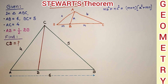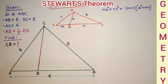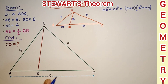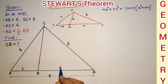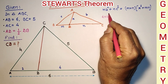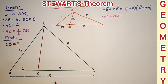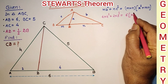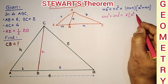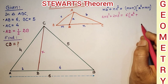Since AD is half of DB and the whole length AB is 6, this means 3 parts equal 6, so AD = 2 and DB = 4. Applying Stewart's theorem: 4 × 4² plus 2 × 5² equals the sum of the two parts, which is the full length 6, multiplied by CD² (which is x²), plus the product of the two ratio parts 2 × 4, which is 8.